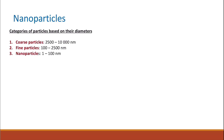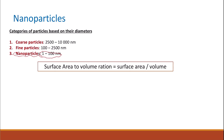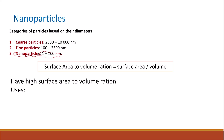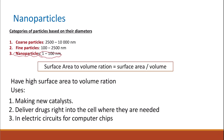Nanoparticles: what's important to know is that nanoparticles are very small — their size is between 1 and 100 nanometers. They have a high surface area to volume ratio, which is why they can be used to make catalysts and to deliver drugs into cells where needed. They are also used in electronic circuits for computer chips because of their very small size.